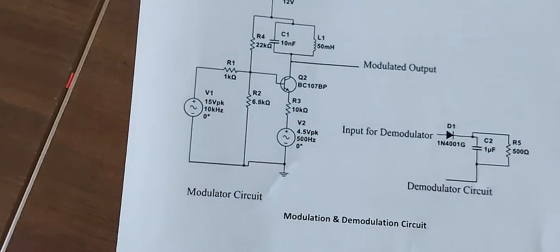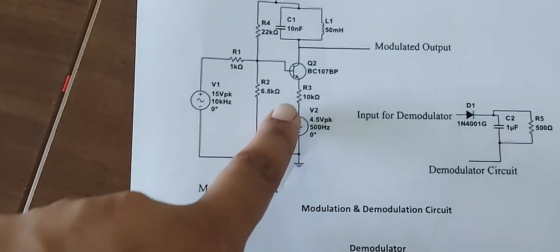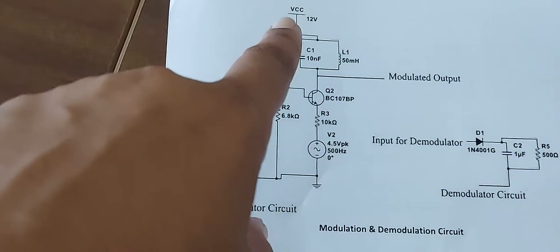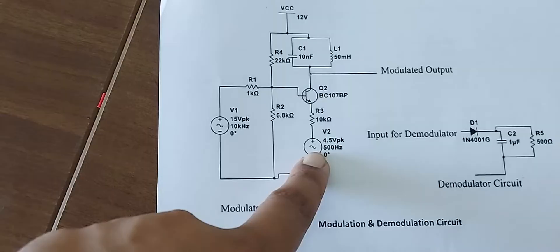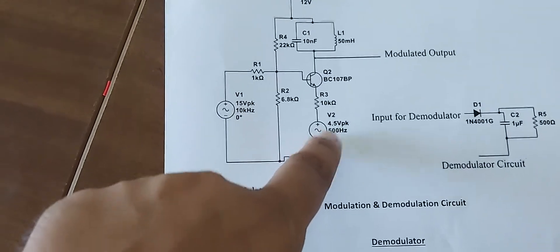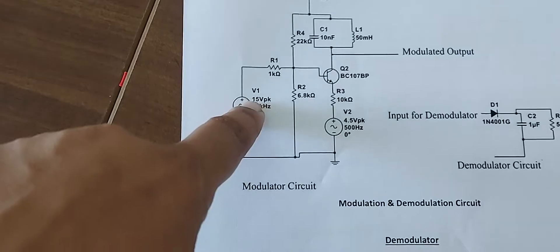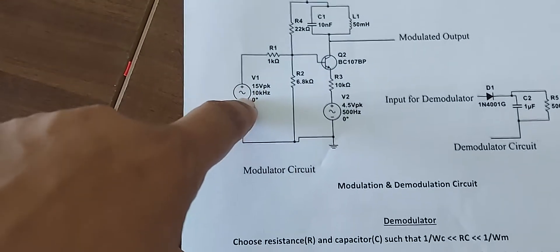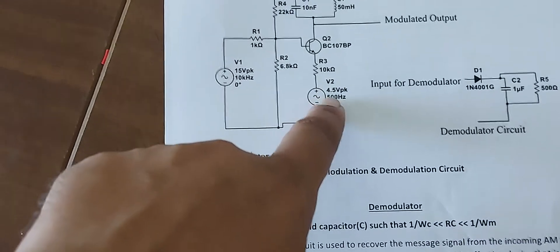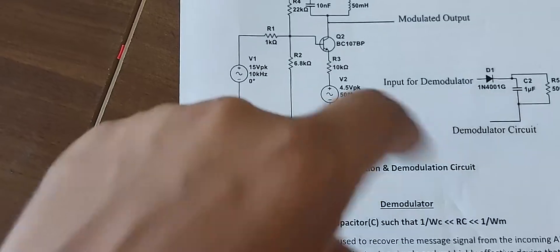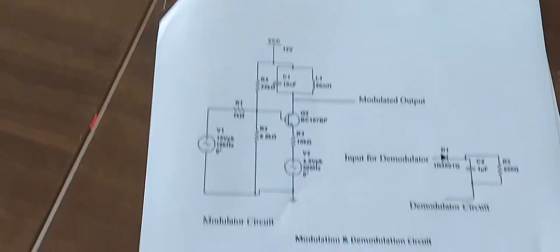So this is the circuit of AM modulation. We have transistor BC107BP, several resistors of different values, one capacitor and one inductor. There are two inputs — one for the message signal and one for the carrier signal. The carrier signal is 15 volt at 10 kilohertz, and the message signal is 4.5 volt at 500 hertz.